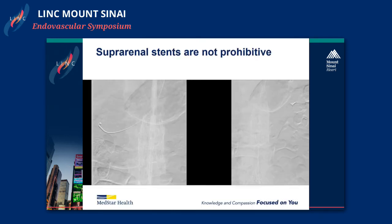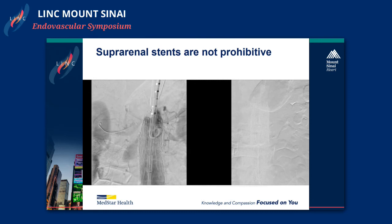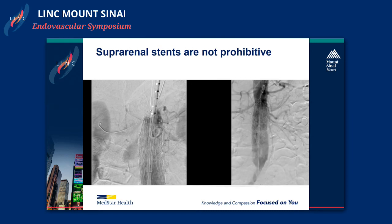It's important to recognize that suprarenal stents are not prohibitive. If there's a device that has a suprarenal stent, you can still typically get through the struts. Here's a patient with a type 1a — we get through the struts into the right renal, then cuffed up and did a snorkel with the right renal. You can see that resolves the type 1a. We just needed more seal zone and to go up higher into healthier aorta in order to seal that leak.